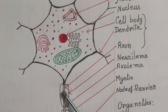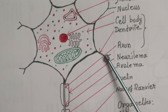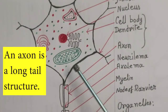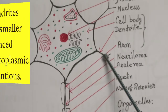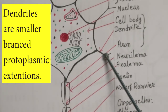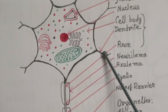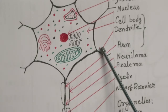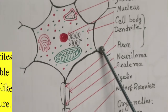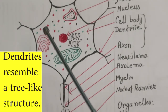There are two types of extensions of a neuron: dendrites and axon. Dendrites are short and heavily branched in appearance, while the axon is much longer. Dendrites are smaller, branched protoplasmic extensions of a nerve cell that propagate chemical and electrical stimulation received from other neural cells. The number of dendrites ranges from zero to many, and they resemble a tree-like structure.